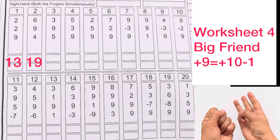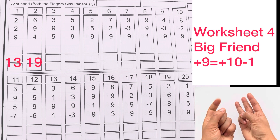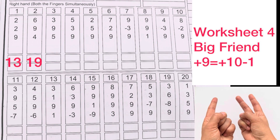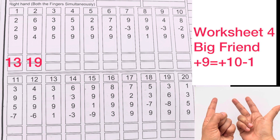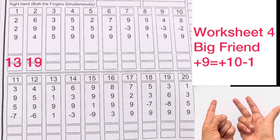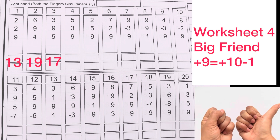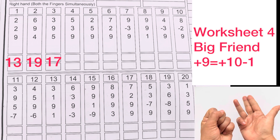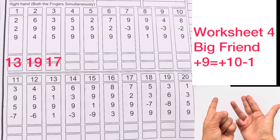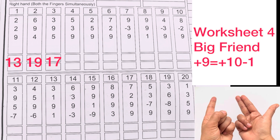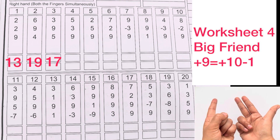3 plus 9, plus 10 minus 1, plus 5. Answer is 17. 5 plus 3 plus 9, plus 10 minus 1. Answer is 17.